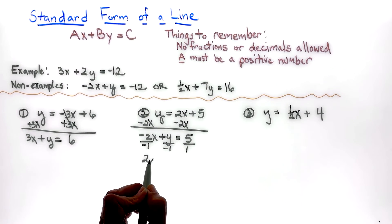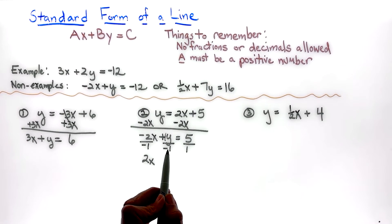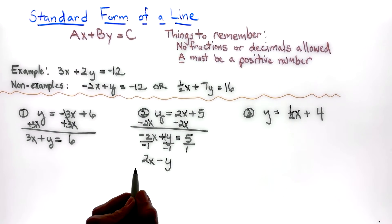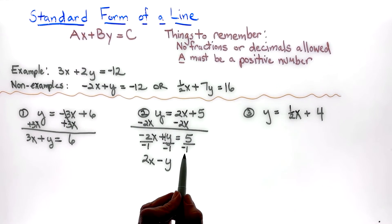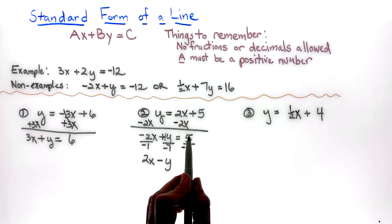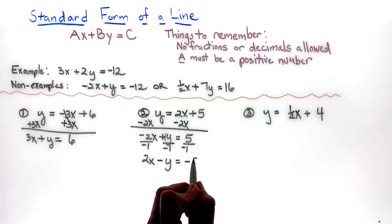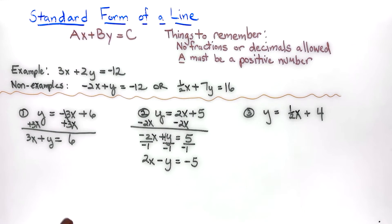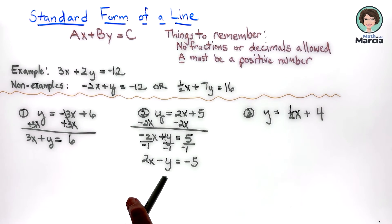Negative 2 divided by negative 1 is 2x — there's our positive number. Positive 1 divided by negative 1 is negative y, and 5 divided by negative 1 is negative 5. So the equation in correct standard form is 2x minus y equals negative 5 — converting from slope-intercept form to standard form.